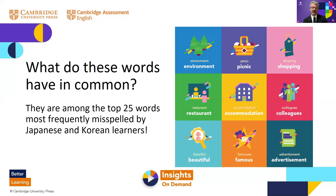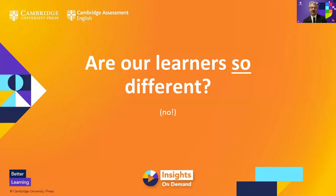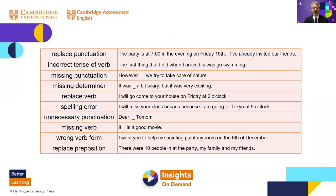So we've seen there are many different errors quite common among Korean and Japanese learners. But how do they compare to learners from other countries? Are these learners so different? Well, actually the research suggests that may not be the case. This slide shows 10 of the most common learner errors, and these specific 10 errors are part of the top 20 errors for every single language group. Corpus research can help us understand not just problems specific to Japanese and Korean learners, but the problems that all learners typically encounter.